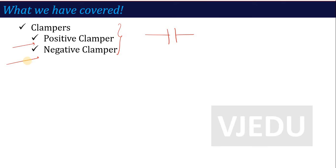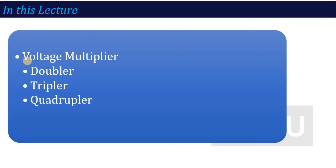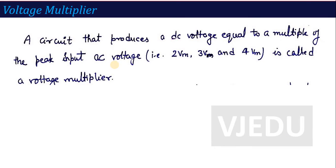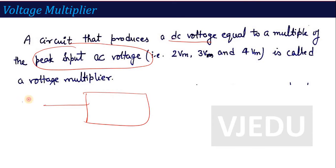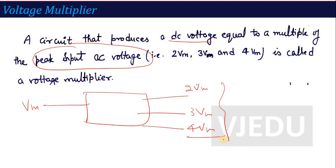Based on the Clamper concept, today's topic is Voltage Multiplier. In the voltage multiplier, the Clamper concept is applied in different multiplier circuits — like the doubler, the tripler, and the quadrupler. A Voltage Multiplier is a circuit that produces a DC voltage equal to a multiple of the peak input AC voltage. So from a given input VM, you can generate double, triple, or four times that voltage.